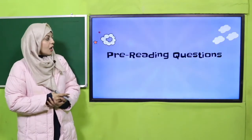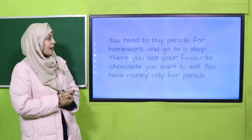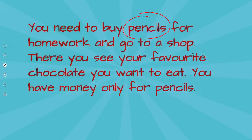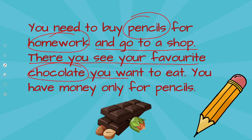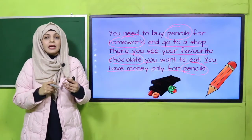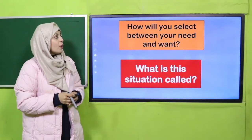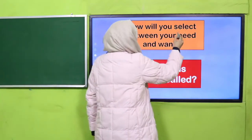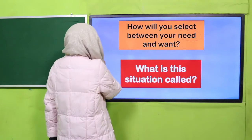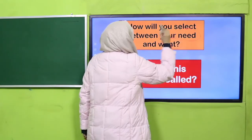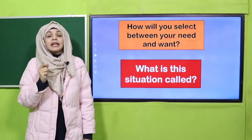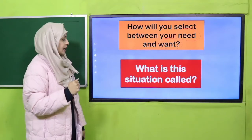Let's look at the pre-reading question. Mein aapko ek situation de rahi hoon: you need to buy pencils for your homework and you go to a shop. There you see your favorite chocolate. You want to eat it. You have money only for pencils. Aapke paas itne paise nahi hain ke aap chocolate bhi khareed sakein. Is situation mein aap kya karenge? How will you select between your need and your want? You want pencil and chocolate both, but you need pencils right now.